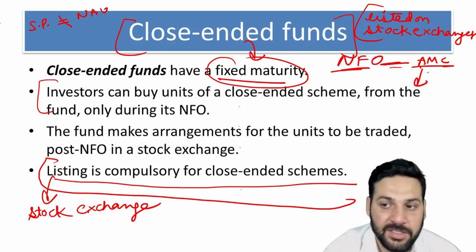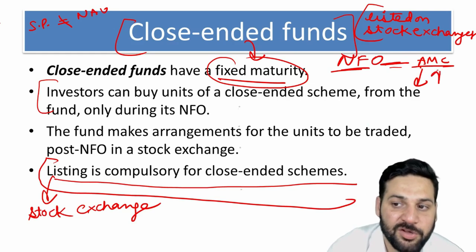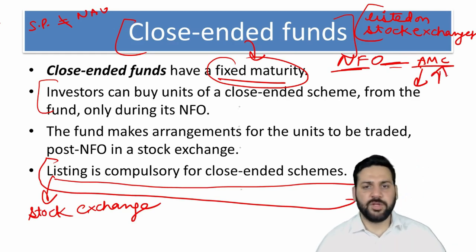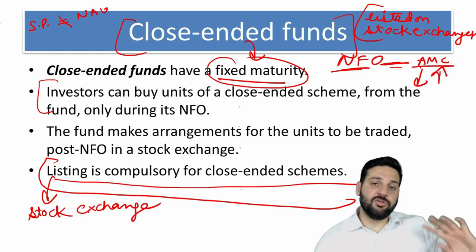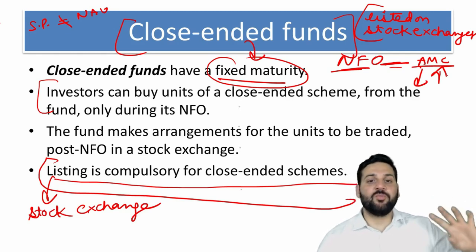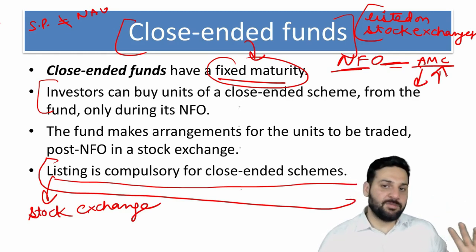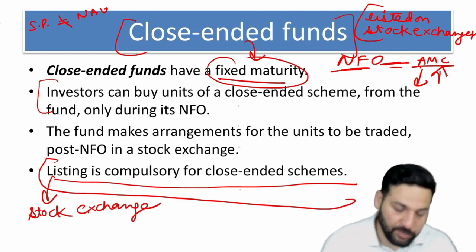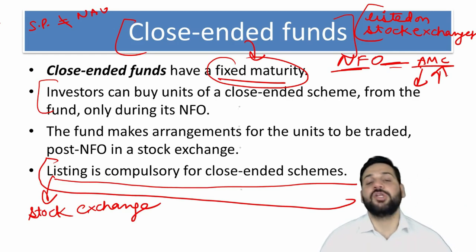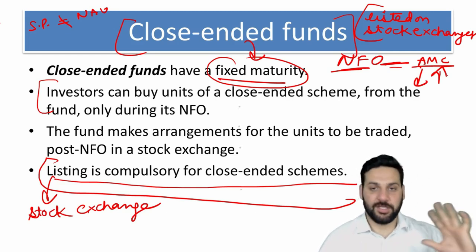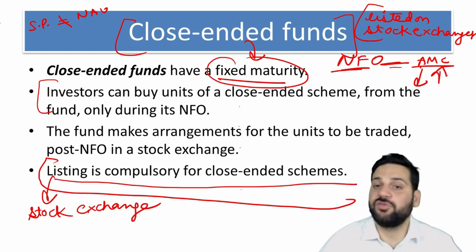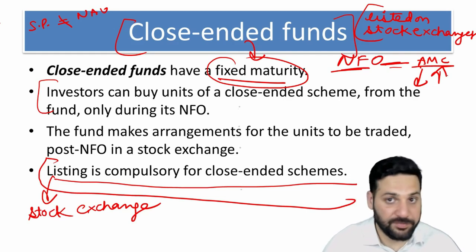You can only buy close-ended funds at the NFO. You cannot redeem before the maturity date, which is normally three or four years. You get your money back at maturity. If you need money before that, you must go to the stock exchange and find a buyer, which is usually very difficult.